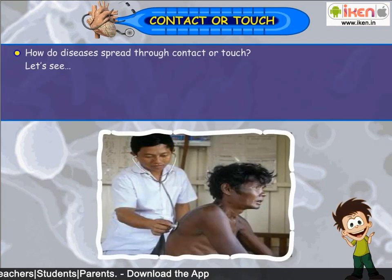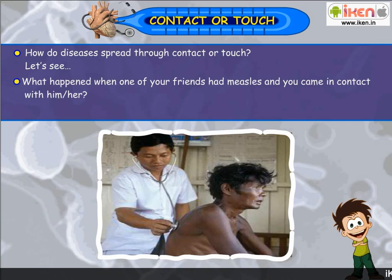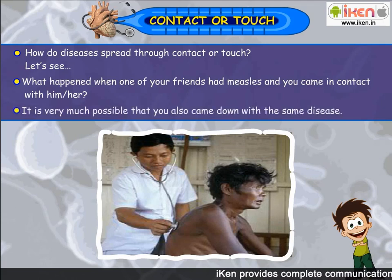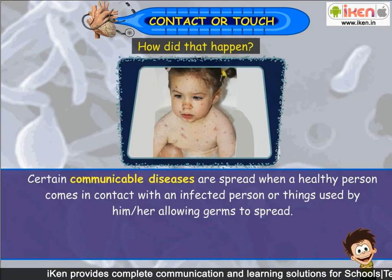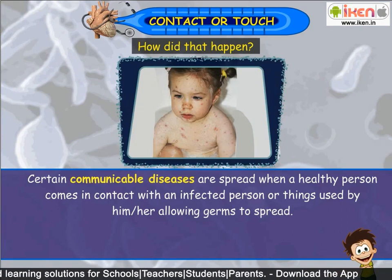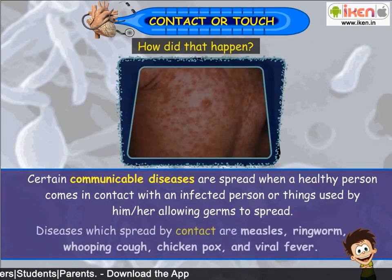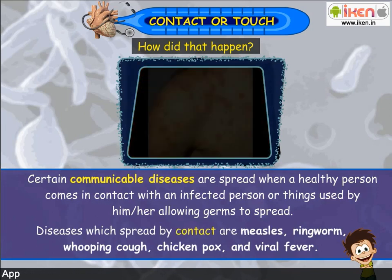Contact or touch: How do diseases spread through contact or touch? If one of your friends had measles and you came in contact with him or her, it is possible that you also came down with the same disease. Certain communicable diseases are spread when a healthy person comes in contact with an infected person or things used by him or her, allowing germs to be spread. Diseases which spread by contact are measles, ringworm, whooping cough, chickenpox and viral fever.